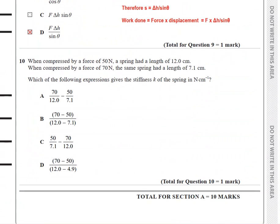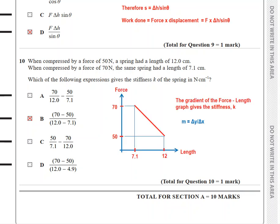Question 10 is very interesting. When compressed by a force of 50 newtons, a spring had a length of 12 centimeters. When compressed by a force of 70 newtons, the same spring had a length of 7.1 centimeters. Which of the following expressions gives the stiffness k of the spring in newtons per centimeter?